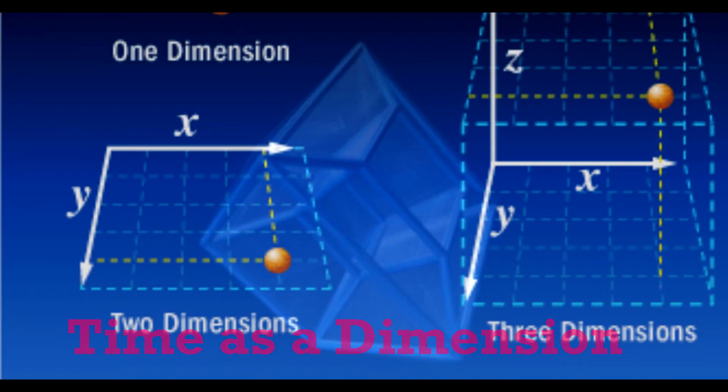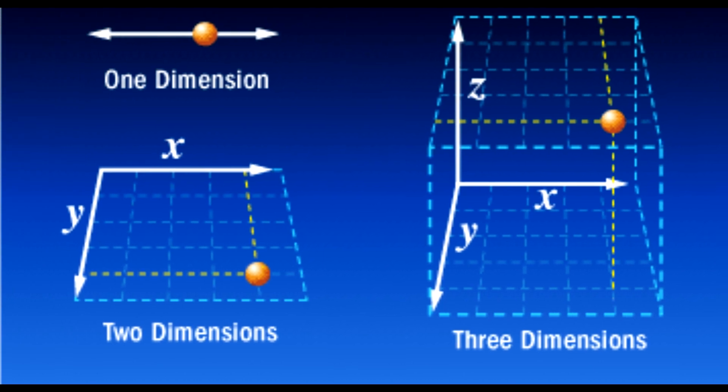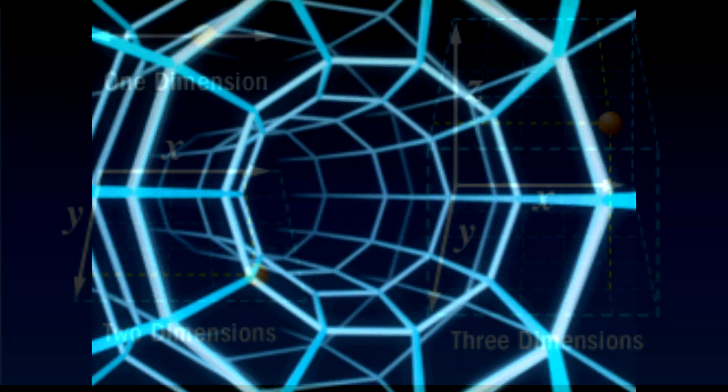In the realm of theoretical physics, time is often considered as the fourth dimension, along with the three dimensions of space. This perspective opens up intriguing possibilities, including the potential for traversing through time.